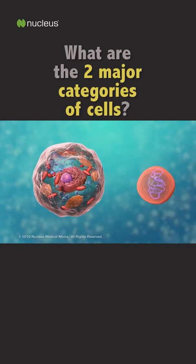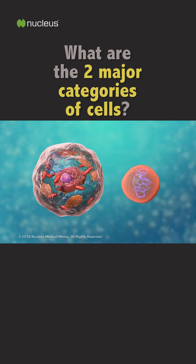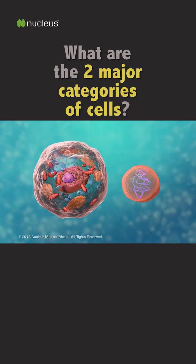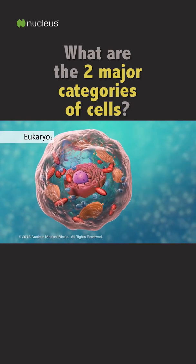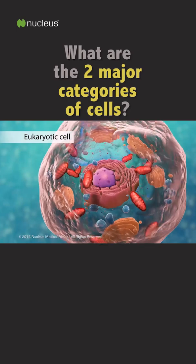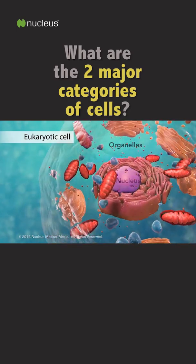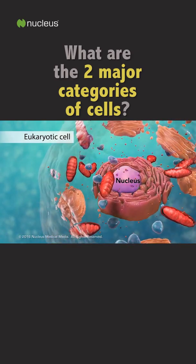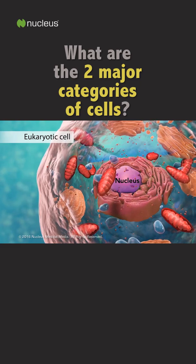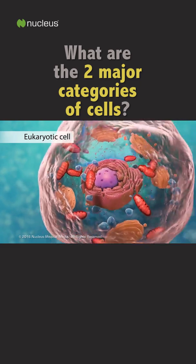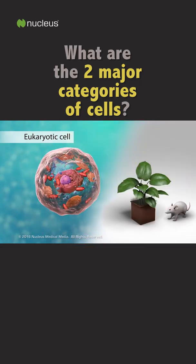There are two broad categories of cells. The first category is eukaryotic cells. They have organelles which include the nucleus and other special parts. Eukaryotic cells are more advanced, complex cells, such as those found in plants and animals.